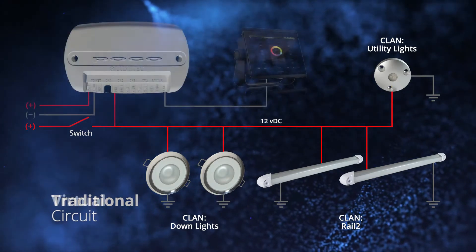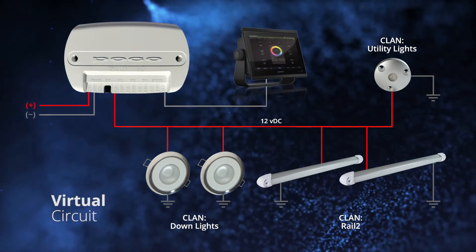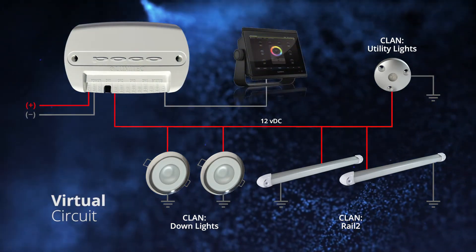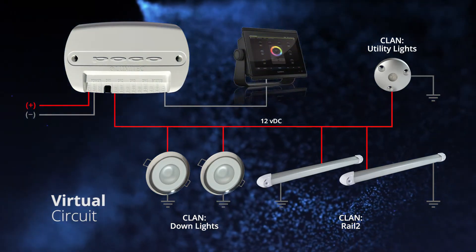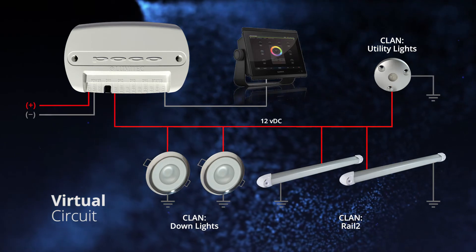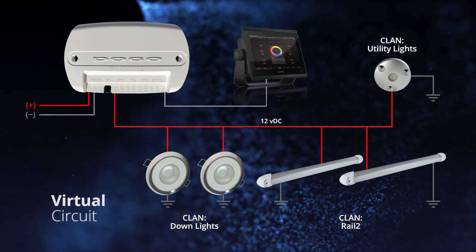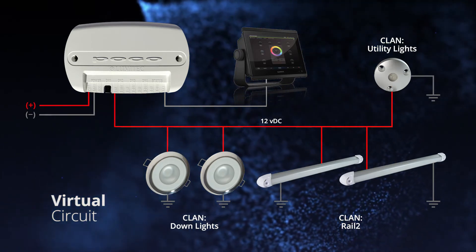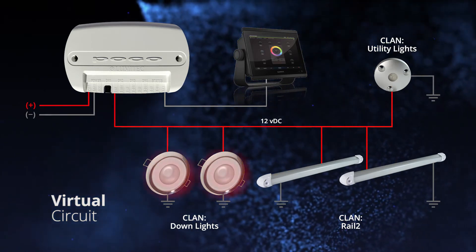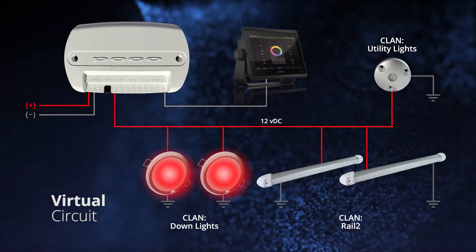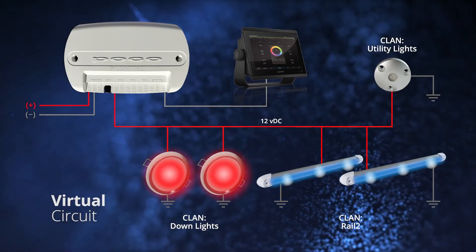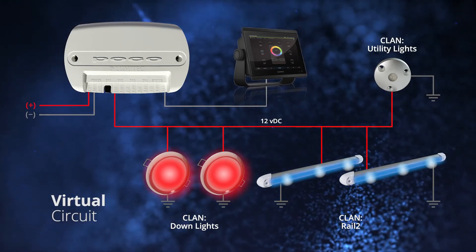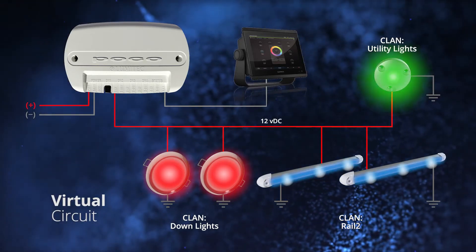However, lights with Lumatech's proprietary PLI technology built-in can be placed on the same circuit, receive separate commands from the POCO module, and behave differently. The down lights clan can be red, for example, while the rail 2 clan is blue, and the utility lights clan is green.